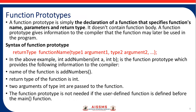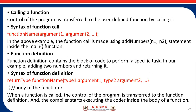These are the function prototypes. The syntax of a function prototype is: return_type function_name(type1 argument1, type2 argument2, ...). For calling a function, control of the program is transferred to the user-defined function by calling it. The syntax is: function_name(argument1, argument2). For the function definition, the syntax is: return_type function_name(type1 argument1, type2 argument2) followed by the function body.